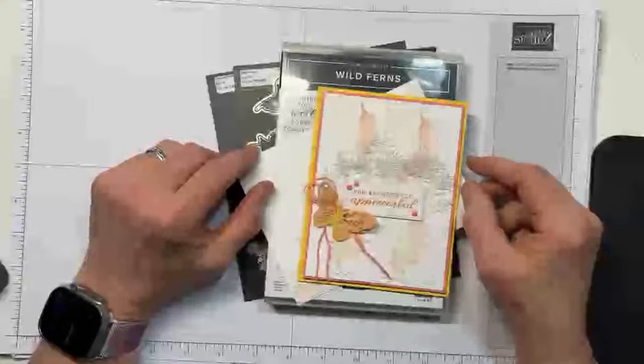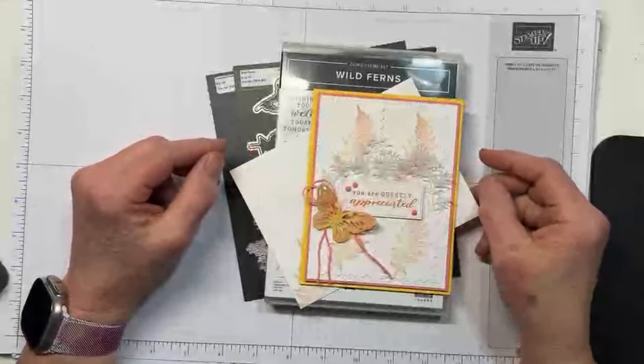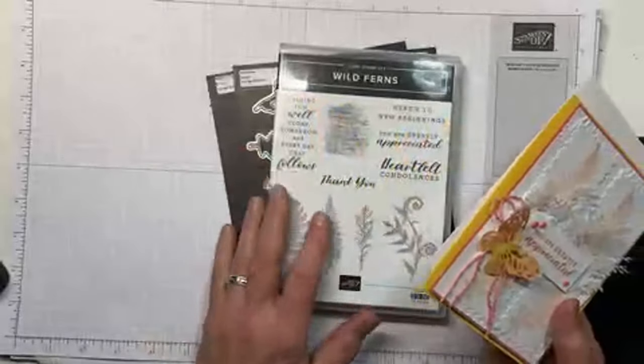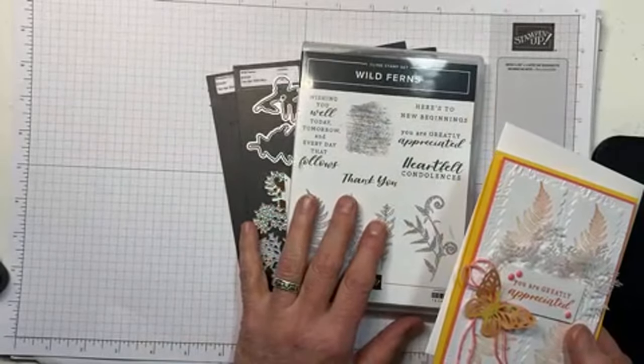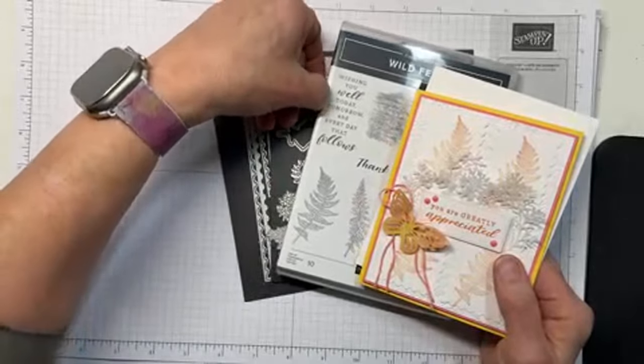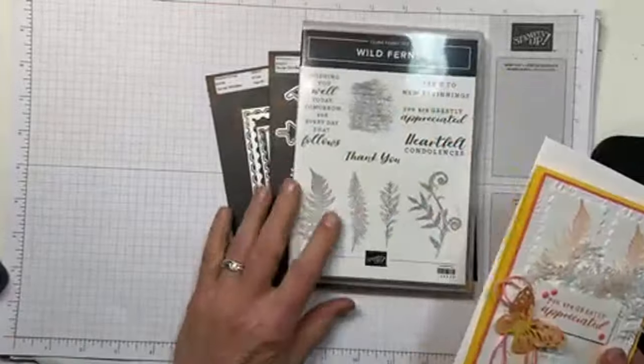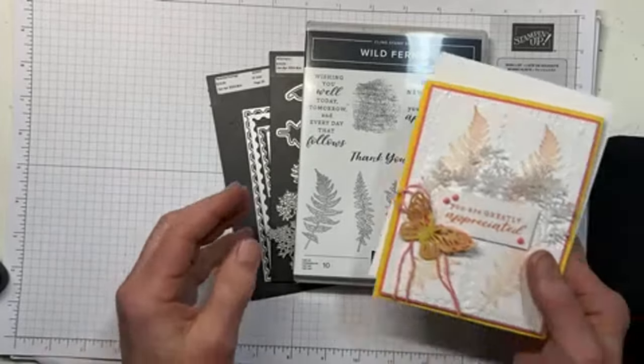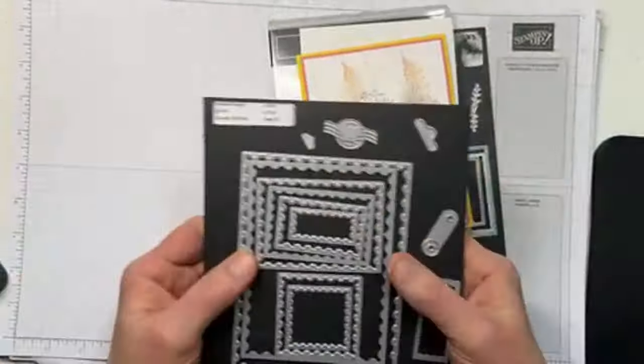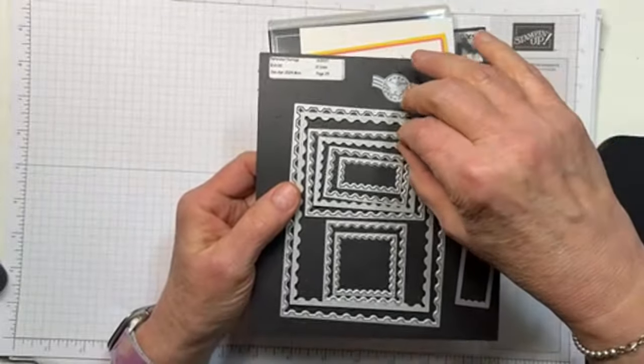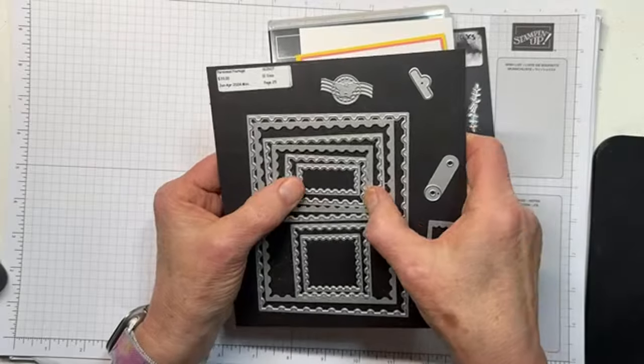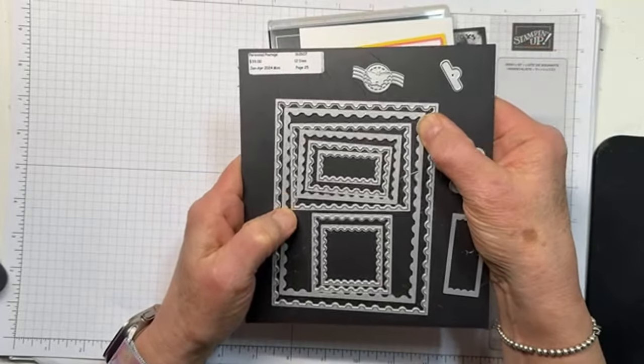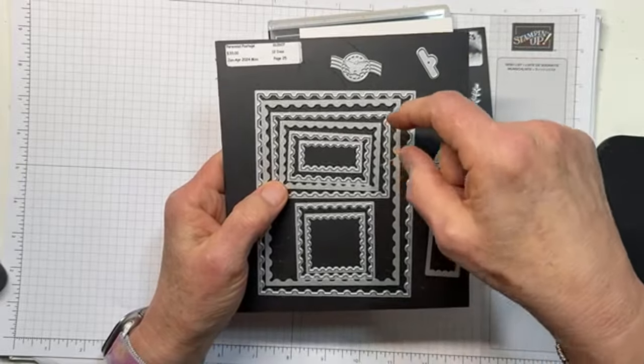So this is the card that I gave you the little sneaky peek of this morning. And it features rather prominently the Wild Fern set, which is in the January to April mini catalog, which is leaving us at the end of April. So if you don't have this bundle, I highly recommend that you get it. I do not know whether it will carry over and be available after the catalog retires.